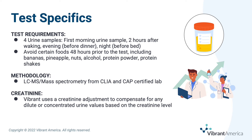Vibrant's neurotransmitter test is a urine test that requires four different samples throughout the day. These include first morning urine, two hours after waking, an evening sample before dinner, and a nighttime sample before bed. Please note that for pediatric patients, a pediatric urine collection bag can be used. It's also important to know that certain foods should be avoided prior to the test, as they may influence the results of various analytes. This is due to many foods inherently containing neurotransmitters or high amounts of amino acids that may result in false positive elevations. These include bananas, pineapple, nuts, alcohol, protein powder, and protein shakes.